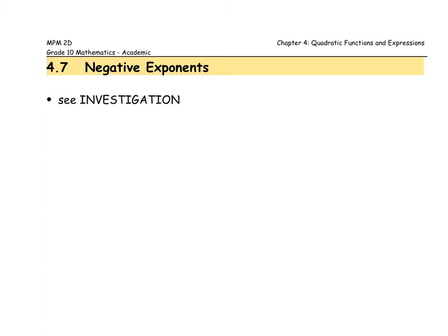In the investigation you would have seen situations where, for example, if you had two to the power of negative one, the way that we would take that value and make it into a positive exponent would be to take the base and place it as a fraction over one, and then that makes the exponent positive.